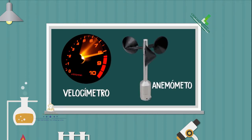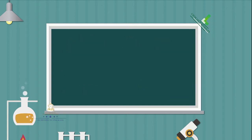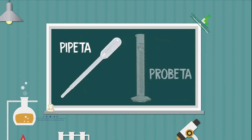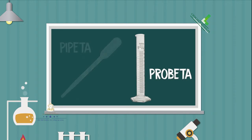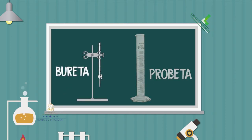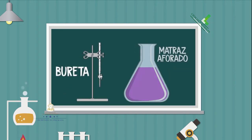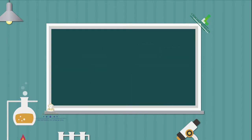Para medir líquidos, o sea, calcular volúmenes, tenemos la pipeta, probeta, bureta y el matraz aforado. Para medir diferentes pesos se encuentra el dinamómetro, que es utilizado para medir fuerzas o para pesar objetos.